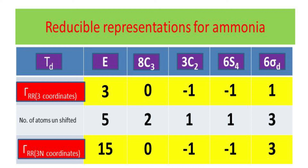For the 3n coordinate system, ask how many atoms are undisturbed under each operation. In methane (5 atoms): E → 5 undisturbed; C3 → 2 undisturbed (one H and C); C2 → 1 (only C); S4 → 1 (only C); σd → 3 (C and 2 H in the plane). Multiplying by the 3D characters gives: 15, 0, −1, −1, 3.